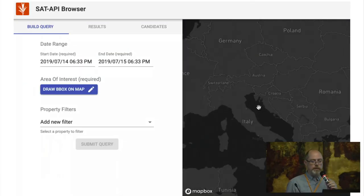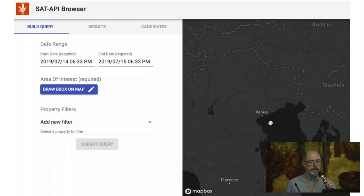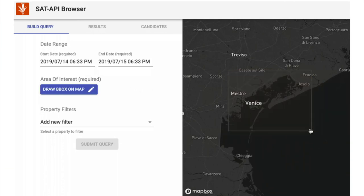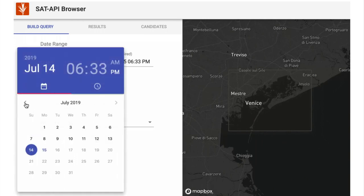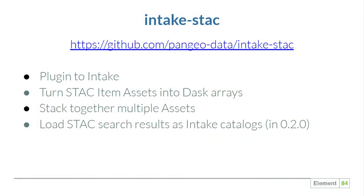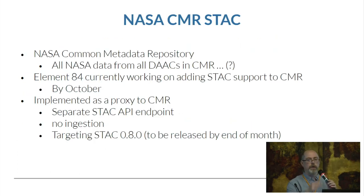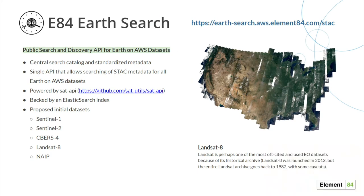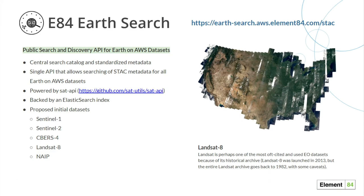SAT API browser is something that Development Seed recently released — it's just an alpha. Like SAT Search, you can point it at any Stack-compliant endpoint and search and save those results. Intake Stack is a plugin for loading data into XArrays and running Dask. We're currently working at Element 84 on adding Stack support to NASA's Common Metadata Repository, and we have a publicly available EarthSearch endpoint that indexes all of the public data sets on AWS.